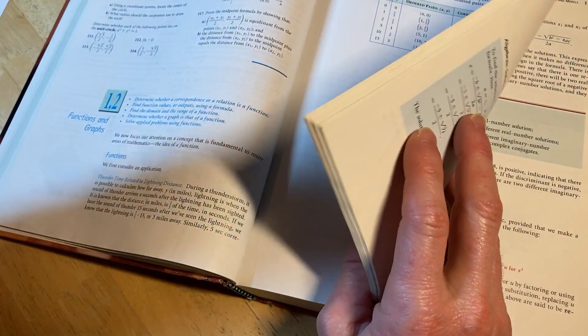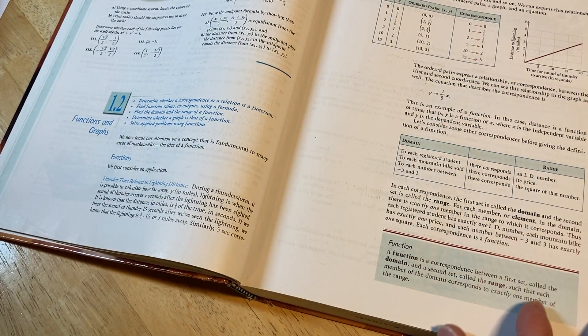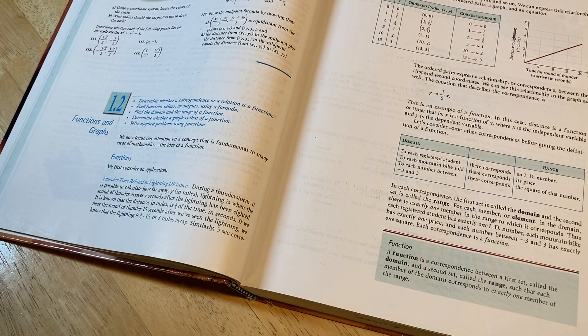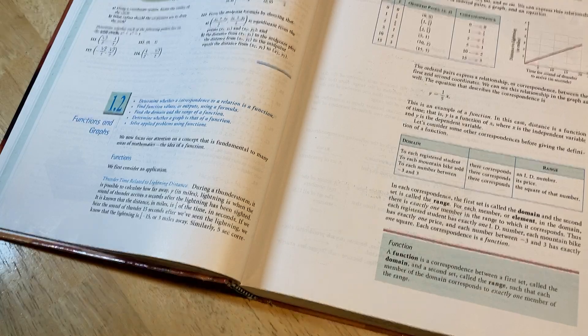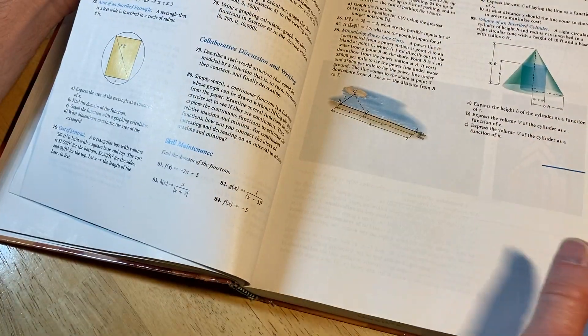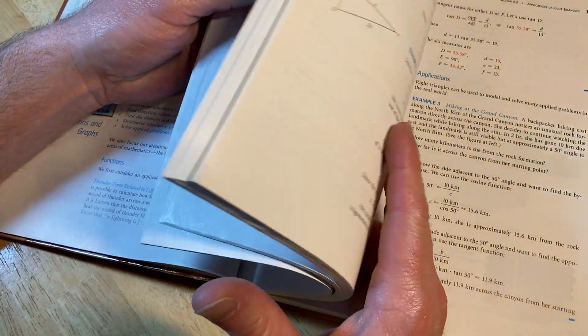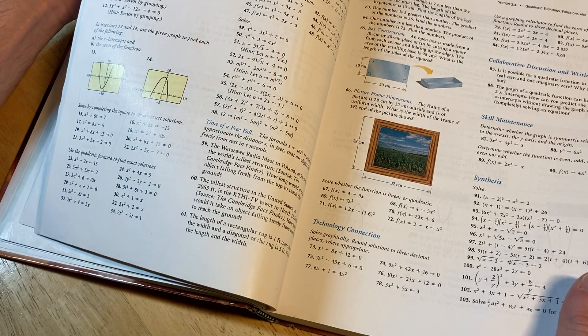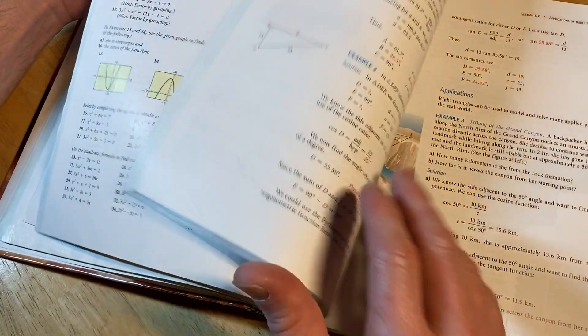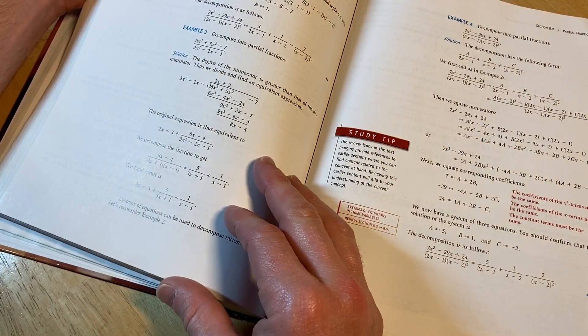My advice would be to sit down every day and do at least one math problem every day. If you can do at least one math problem every single day, you are going to get better at mathematics. You're going to get a lot better at it if you take that approach. And you're going to find that once you do one problem, you're going to want to do more than one. You're going to start feeling like a warrior, and you're just going to become mentally tough and really strong at mathematics.